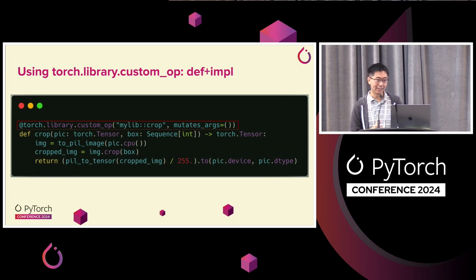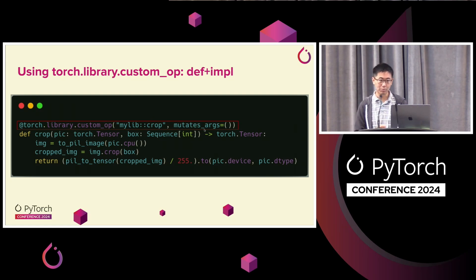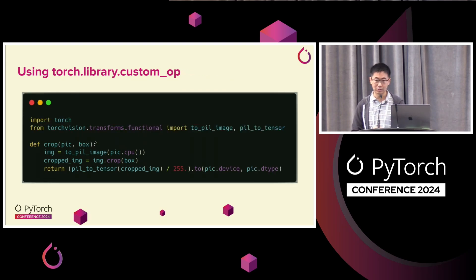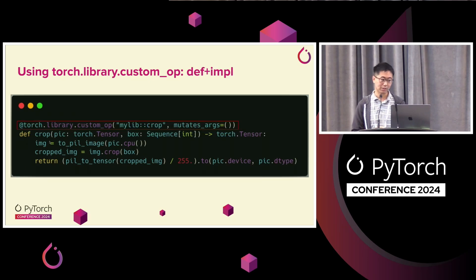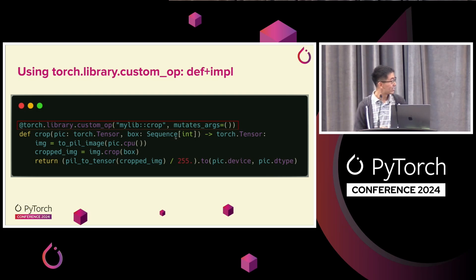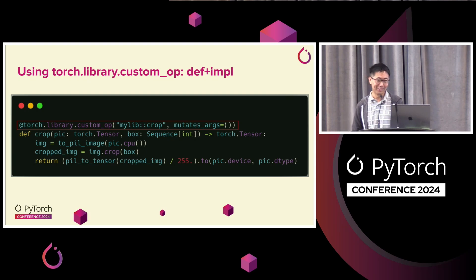You have to add three more things to actually make this work. All custom ops in PyTorch need a name — that's the mylib::crop. You need to tell us what inputs the custom operator mutates, which is important for interfacing with PyTorch subsystems. And you need to add type annotations to the crop function — you need to tell us what it accepts (a tensor and a box in this case) and what it returns (a tensor). The saturation on screen isn't great, so you can download the slides from the website after the talk.